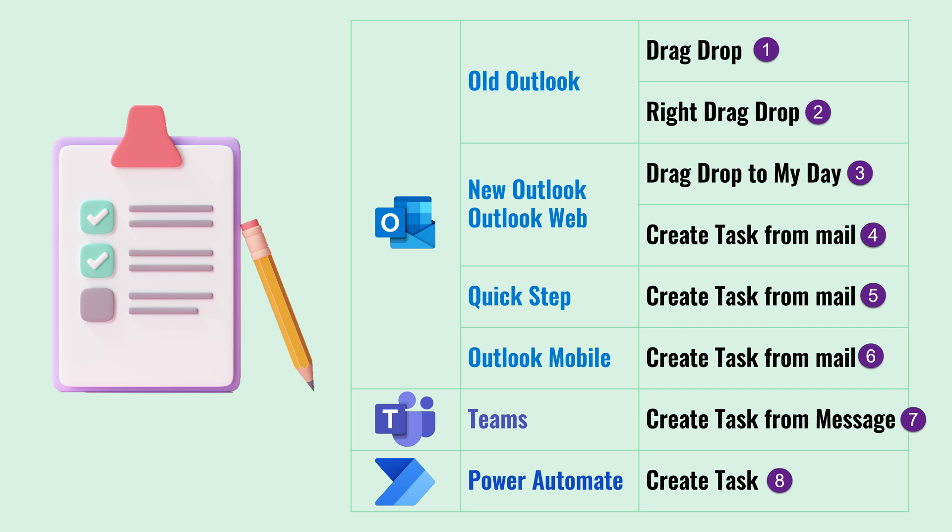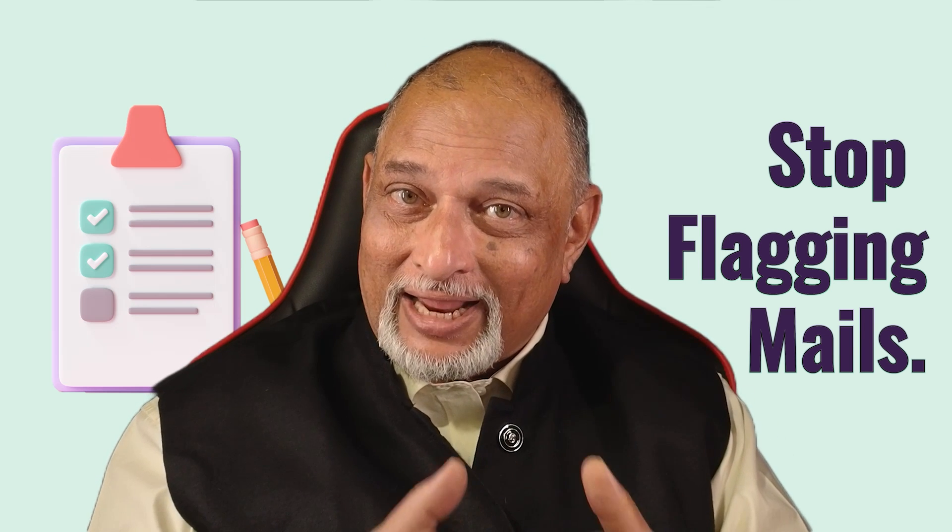So there you have it — eight different methods. Choose the one you like and stop flagging emails. Share this with as many people as you can, subscribe and click the bell icon, and ask me questions. Suggest topics and I'll be happy to create more for you. Before you go, watch the video about how new Planner is revolutionizing the way you manage tasks. That's it for now — see you next time, thank you.